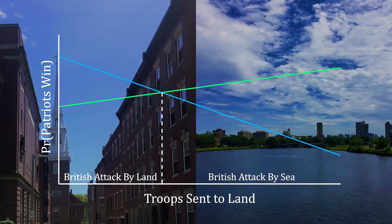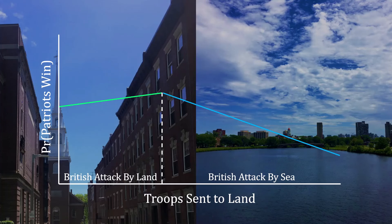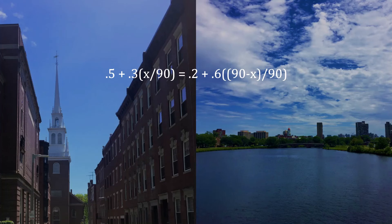Now that we know that, we can make progress on what the Patriots should do with their allocation. Because we know the British response to any given allocation, we can truncate this figure to show the Patriots' probability of victory given the British best response. From here, it's clear that the best the Patriots can do is choose an allocation that makes the British indifferent between attacking by land and attacking by sea. What we really need to know is where exactly those two lines intersect.